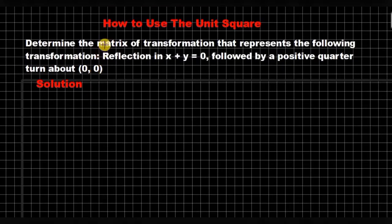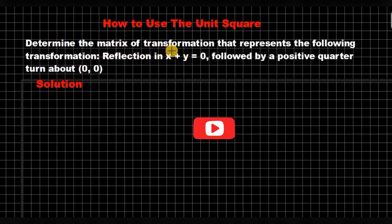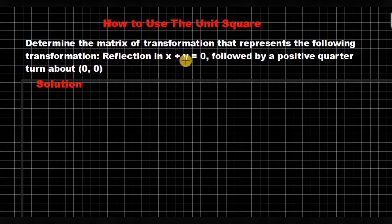Welcome to today's presentation. Today we are going to learn how to use the unit square to determine the matrix of a given transformation. Determine the matrix of transformation that represents the following transformation: reflection in x plus y is zero, followed by a positive quarter turn about the origin.